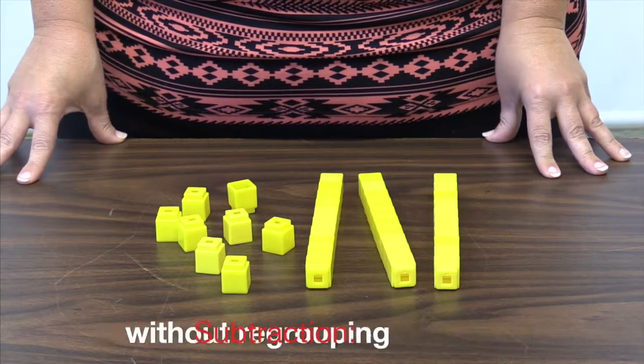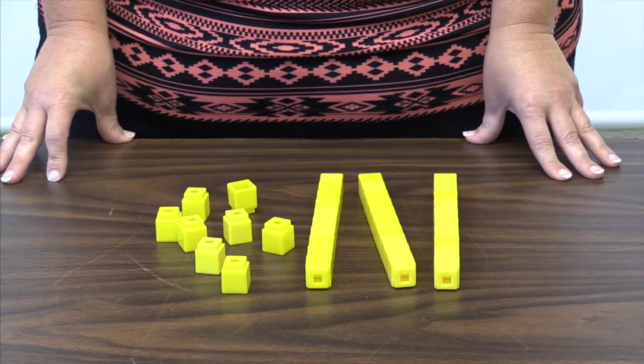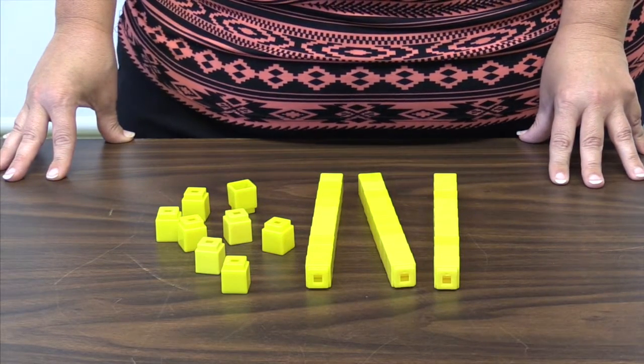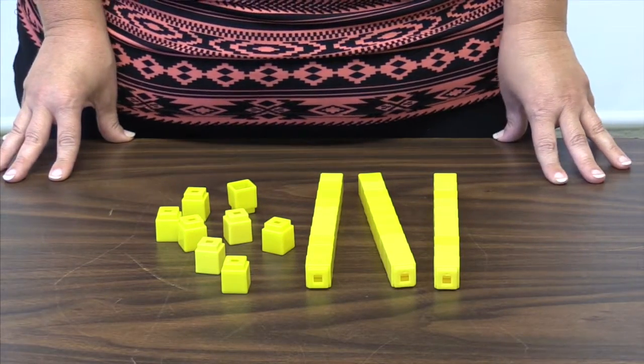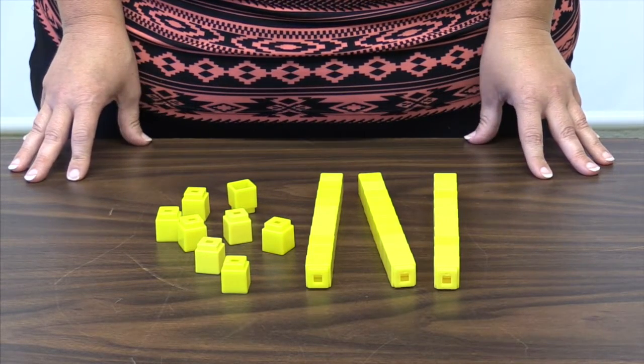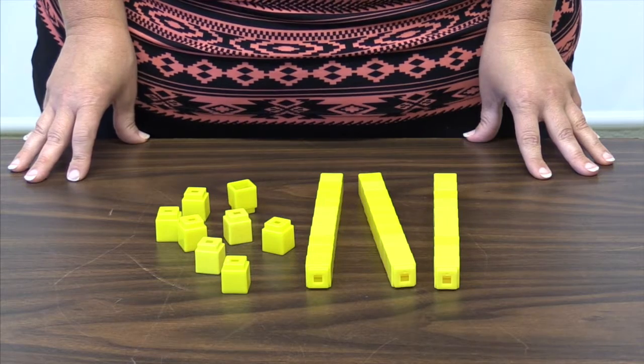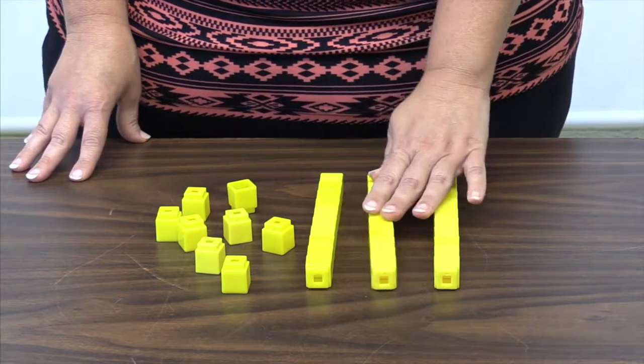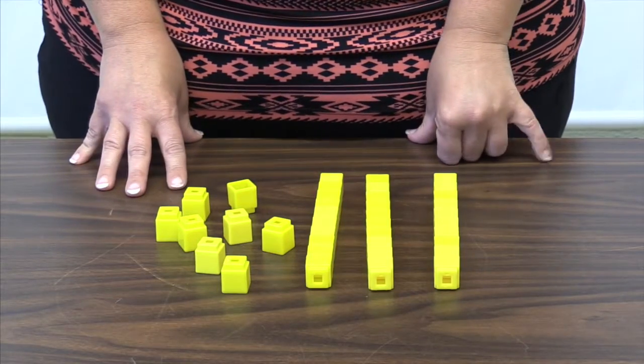Subtraction. Subtraction without regrouping. Subtraction is a decomposition strategy. We start with something, take something away, and look at the result, or we measure the difference by comparing two numbers. To model this, students should only model the start number, which is 38 in this case. Let's look at this problem.